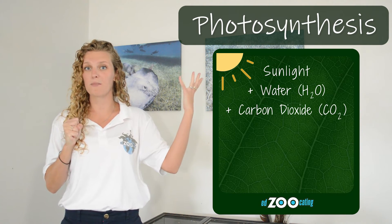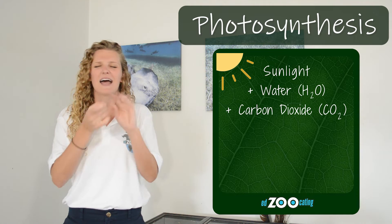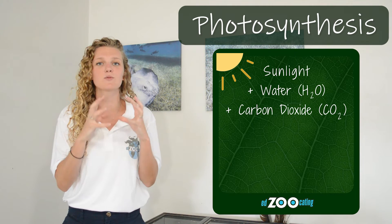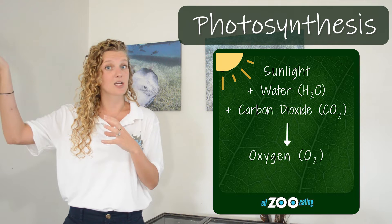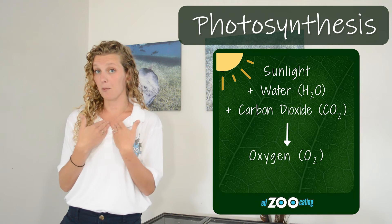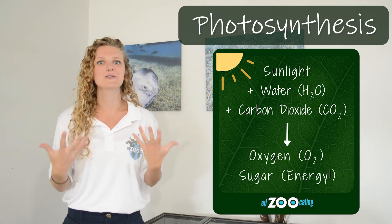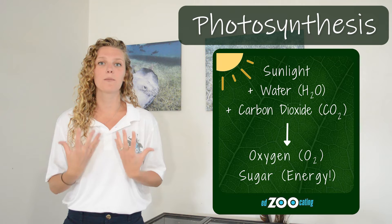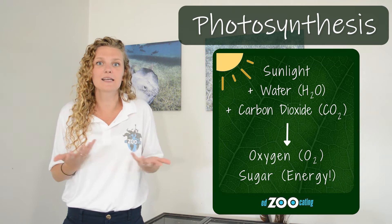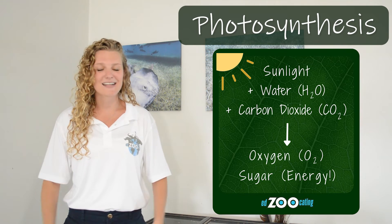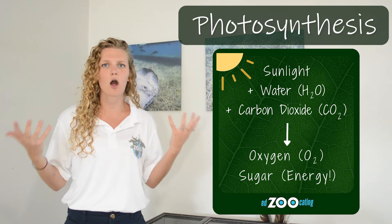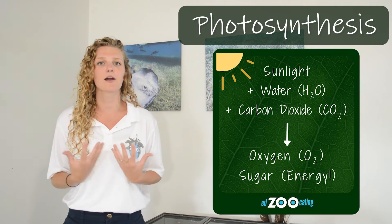Leaves absorb sunlight, and then they take water and carbon dioxide from the air. They have this amazing process where they change all of that into oxygen that we breathe and nutrients and energy for the plant. It basically creates food for the plant, and that is what allows the plant to continue to grow and get bigger and stronger.